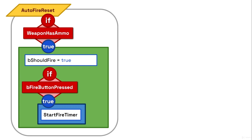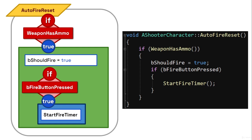In auto fire reset, which gets called at the end of the timer, we first check to see if the weapon has ammo. If it does, we set B should fire back to true so that we can fire the weapon again. And if B fire button pressed is true — in other words, if we're still pressing that button or holding it down — then we start the fire timer again. If it's not true, we don't start the fire timer again. But we could of course lift our finger and then press the button again, which would call start fire timer anyway, and the whole process will repeat.